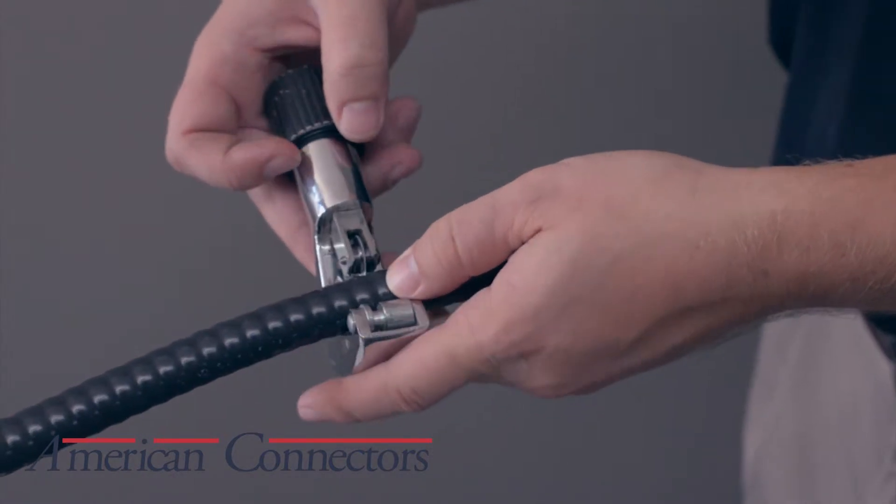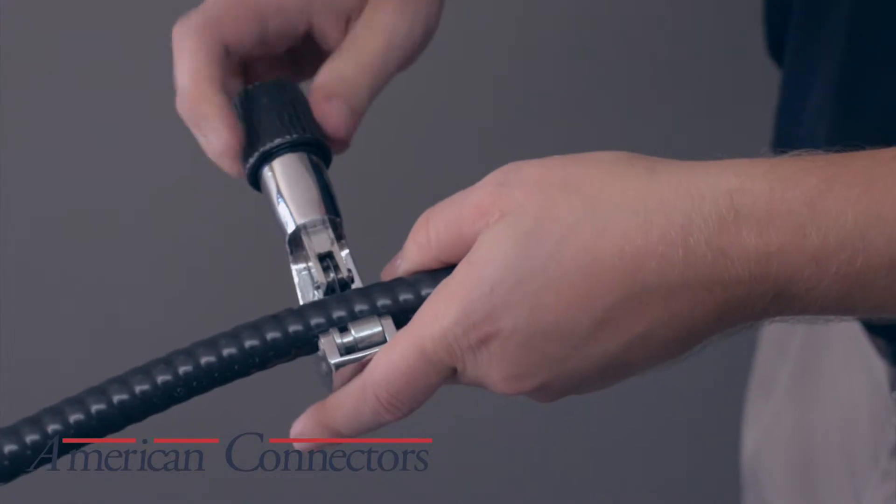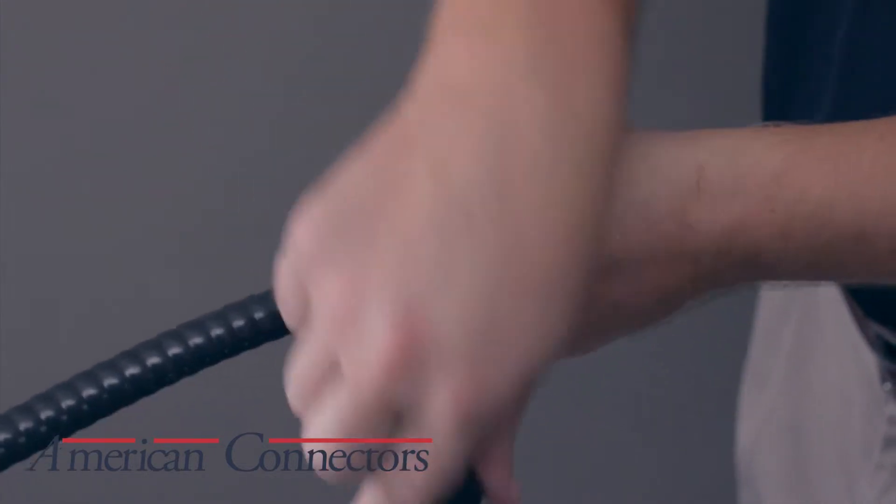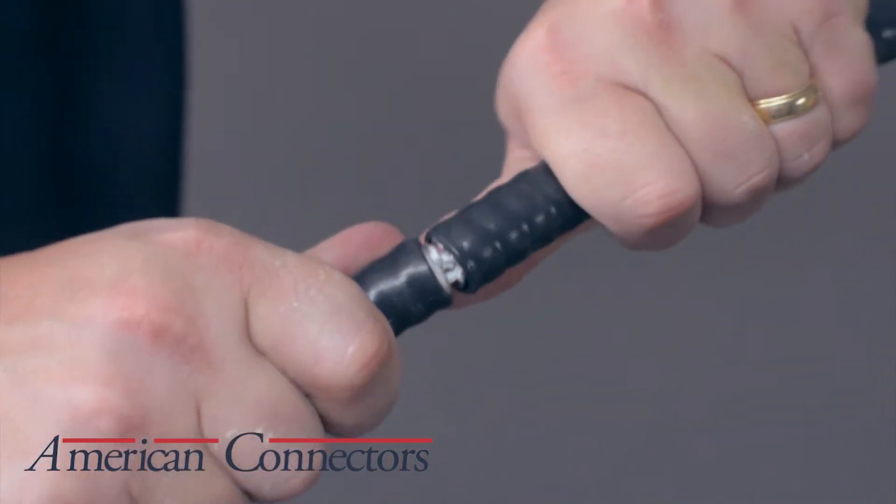Since this is continuous corrugated welded cable, we will use a standard pipe cutter to cut the cable.